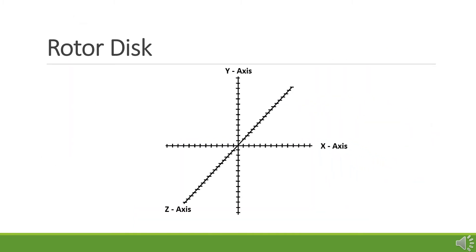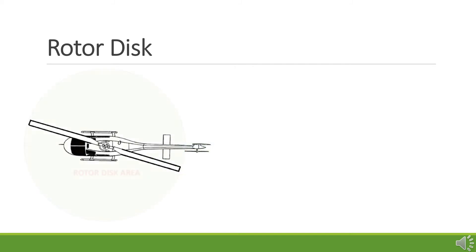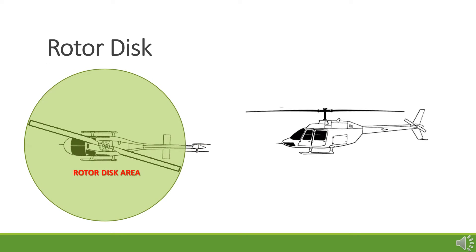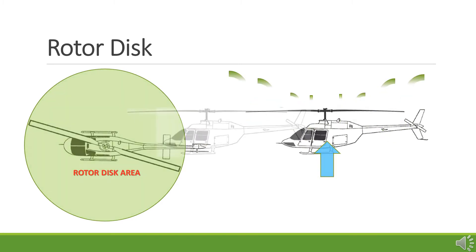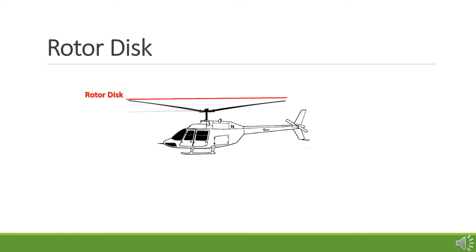To understand how motion along the Y-axis and within the X-Z plane is accomplished, we need to look at the concept of the rotor disc — the area in which the main rotors operate. As the main blades rotate, they push air in the rotor disc downward. By Newton's third law, the opposite reaction is an upward force on the helicopter. This upward force causes the rotor blades to flex or bend upward, which changes the location and, in some conditions, the tilt of the rotor disc. The helicopter uses this rotor disc motion and tilting to move along the Y-axis and within the X-Z plane.